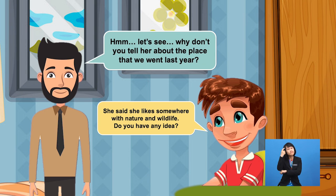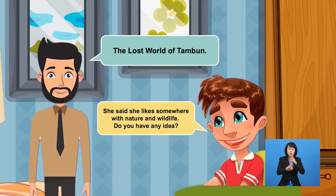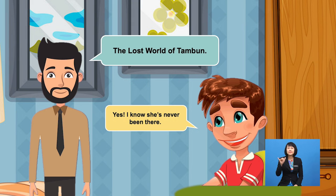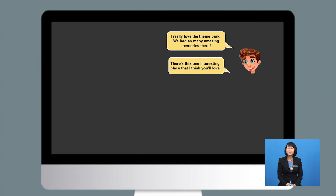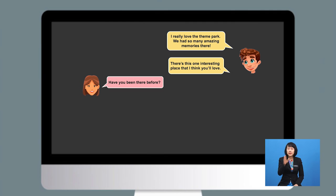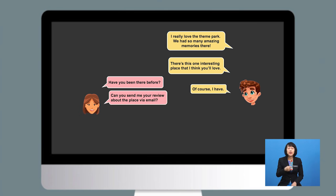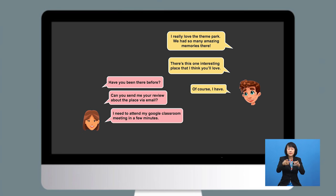Hmm, let me see. Why don't you tell her about the place that we went last year? The Lost World of Tambun. Yes, I know she's never been there. I really love the theme park. We had so many amazing memories there. There's this one interesting place that I think you'll love. Have you been there before? Of course I have. Can you send me your review about the place via email? I need to attend my Google Classroom meeting in a few minutes. Talk to you later.